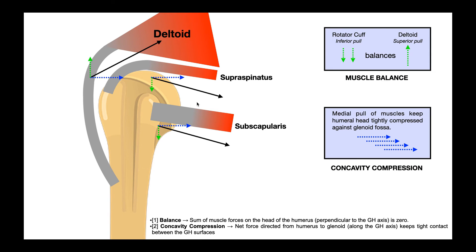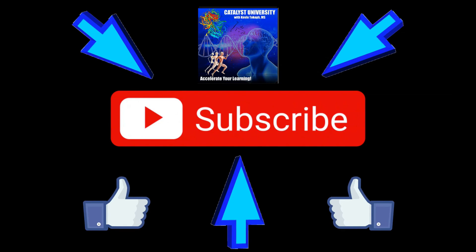When you think about muscle balance and concavity compression — two non-ligamentous mechanisms — consider each muscle: does it promote a superior or inferior pull? Those forces must be balanced in the vertical direction — that's muscle balance. For concavity compression, it's the medial pull on the humerus toward the glenoid fossa, producing stability in the horizontal direction. Hopefully this video gave you a good understanding of both concepts, and we'll talk about the other mechanisms in the next video. Please like and subscribe for future videos and notifications. Thank you.